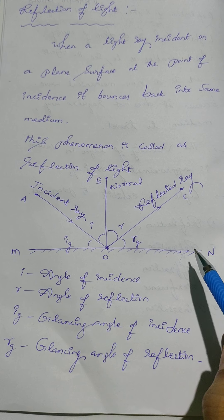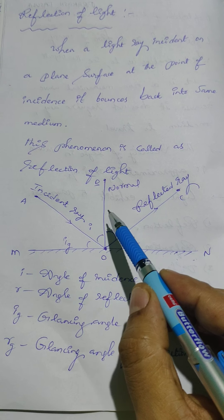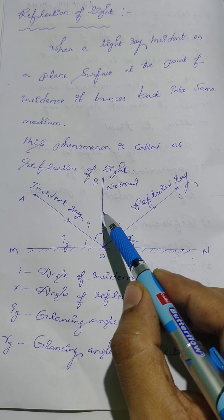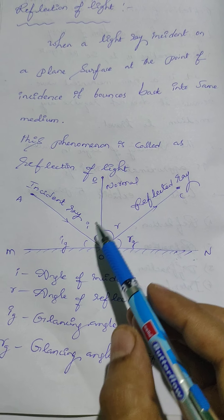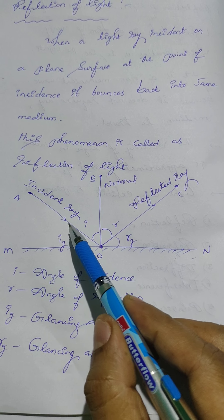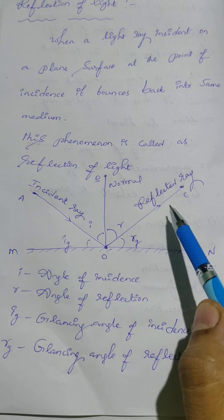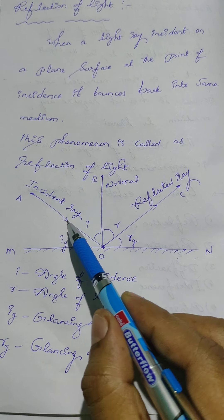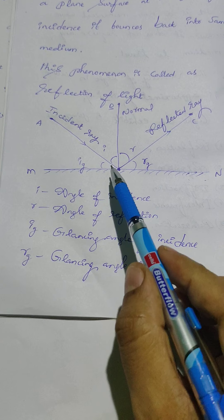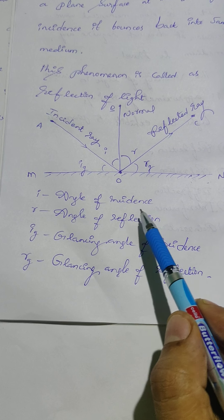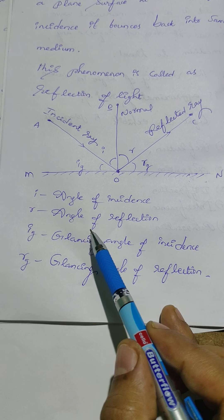And here a perpendicular line which drawn to the surface is called a normal. It's not a light ray, that's why I did not keep here arrow mark. And to represent a light ray we must and should keep an arrow mark like this. This arrow mark indicates the direction of light ray. And next here I is the angle of incidence and R is the angle of reflection.